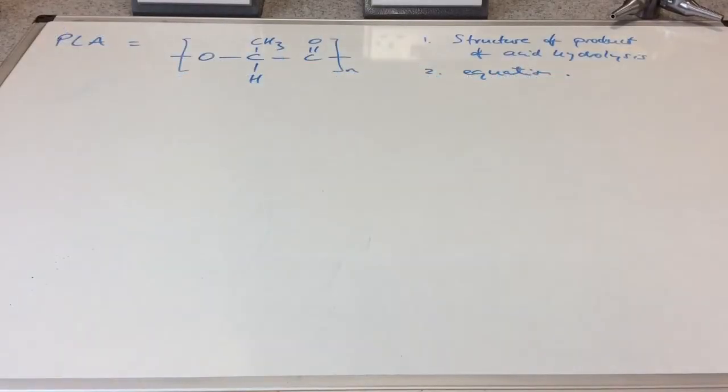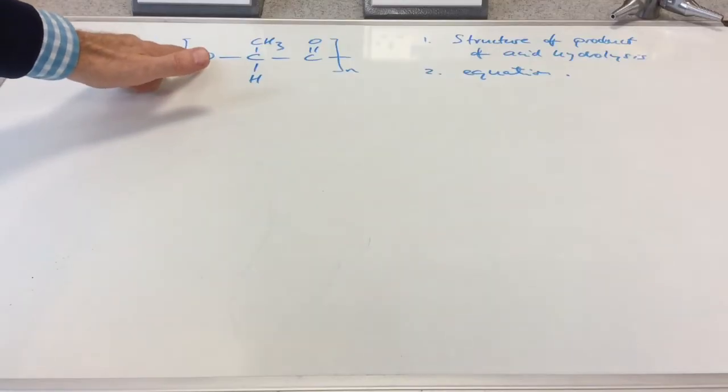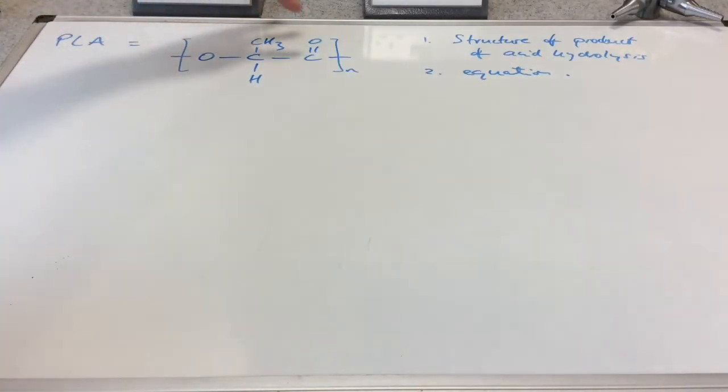Here's a question for you to try. I've got this polymer here. It's a polyester. You can see the ester bond at either end of the molecule. That single bond O will just repeat there. So this is called polylactic acid. Can you draw the structure of the product of acid hydrolysis? And can you turn that into a chemical equation?